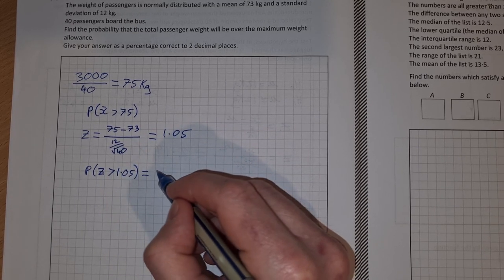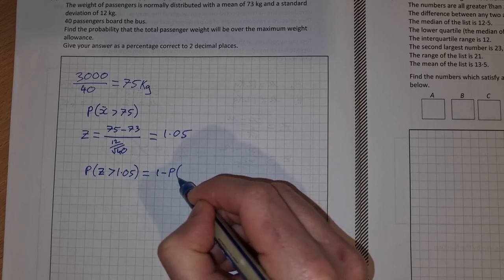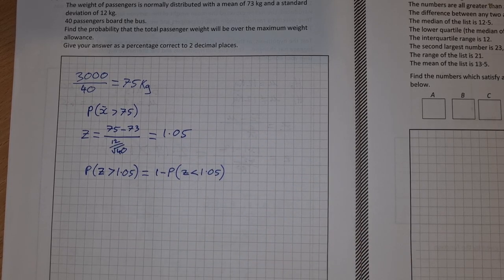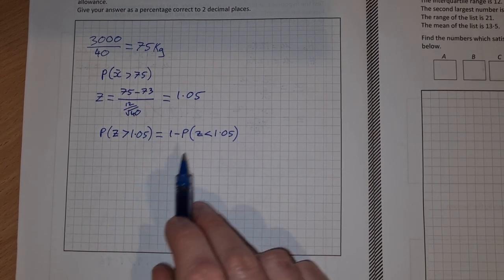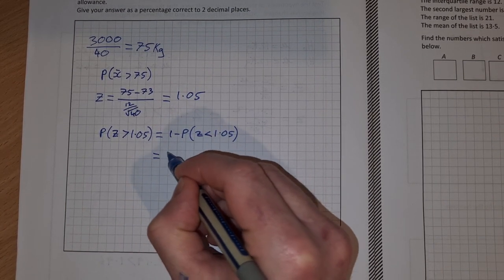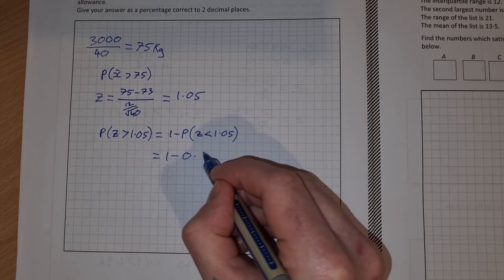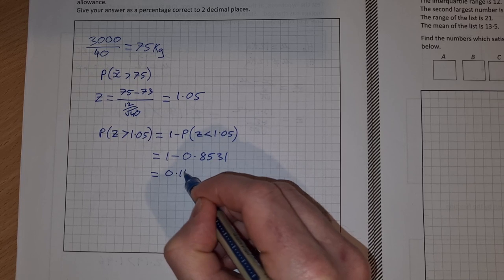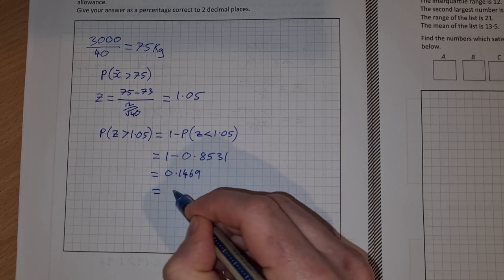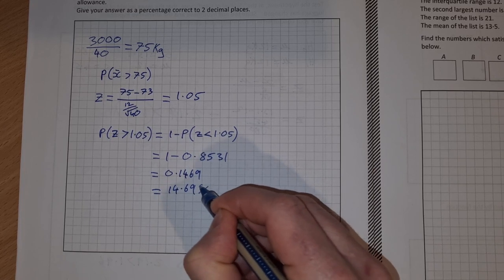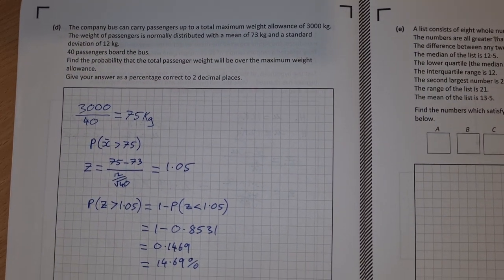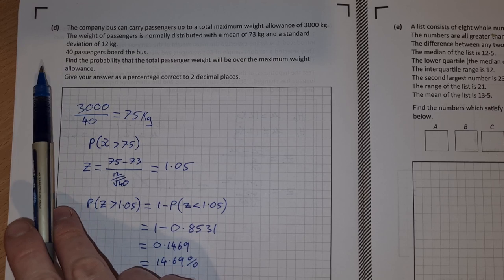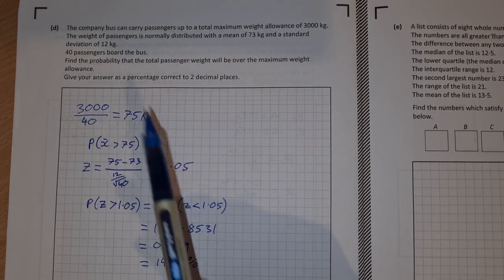To find that, we would find 1 minus the probability that our z-score is actually less than 1.05, because the z-tables only give us less than, they don't give us greater than. So we find 1.05 in our z-tables. It'll be 1 minus, if you look up 1.05, you get 0.8531. So that's equal to 1 minus that is 0.1469, which equals 14.69%. So what that's saying is there's a 14.69% chance that if you have 40 passengers on the bus, then the bus will be overloaded. It'll weigh more than the 3000 kg.